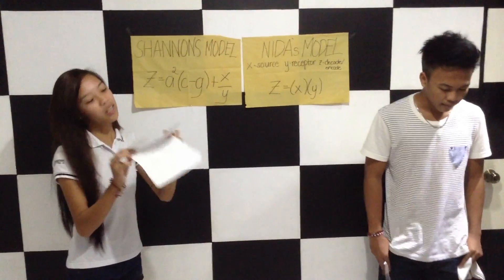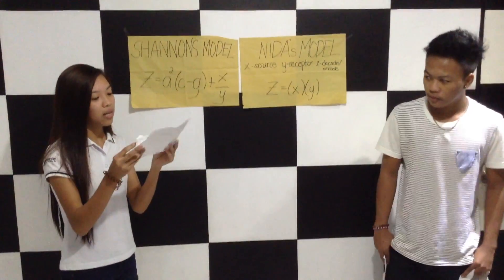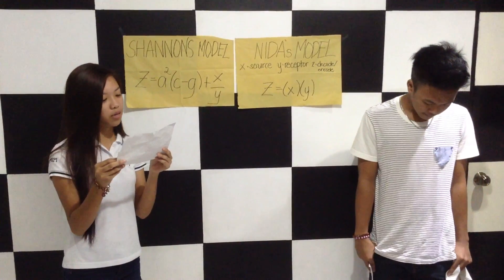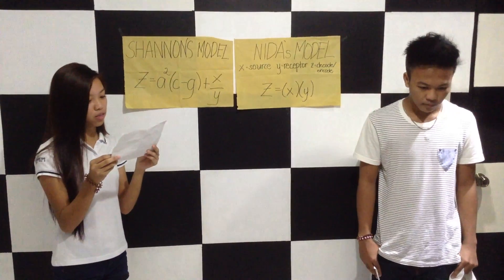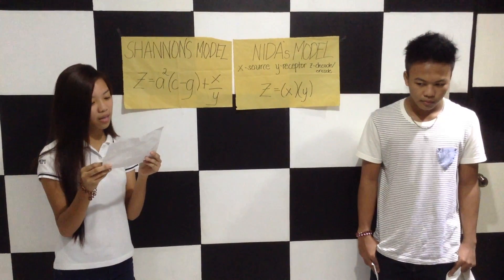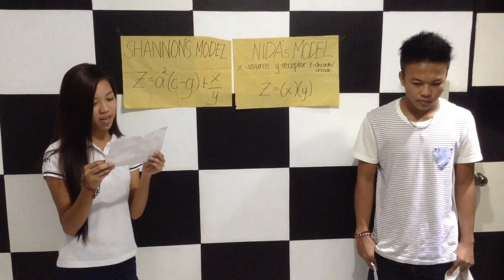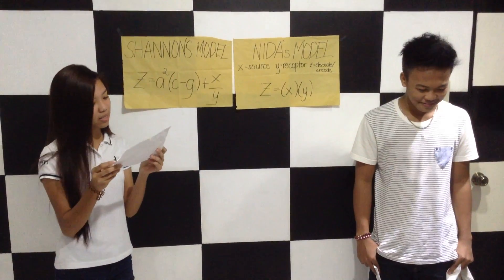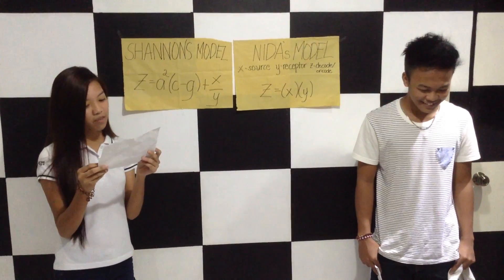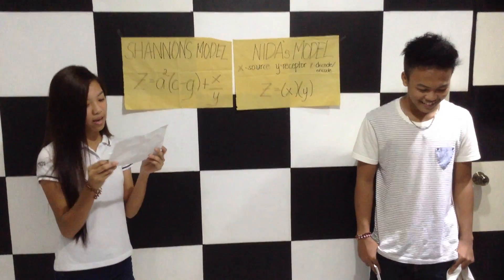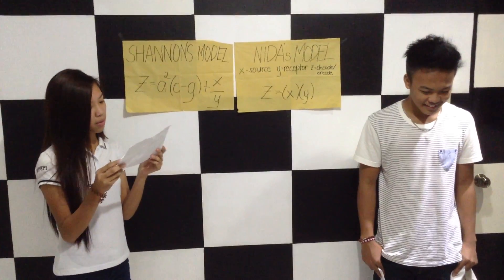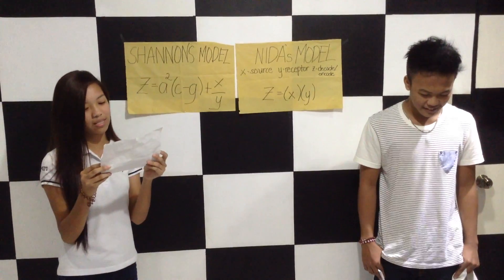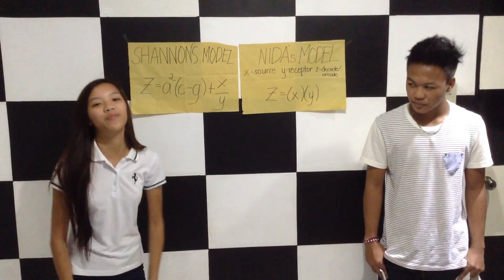In Shannon's model, let the info source be A, who carries the message. The message will be distributed to the transmitter and will be interrupted by the noise. And the receiver, which is X, will get the message and the message will go on to its destination.